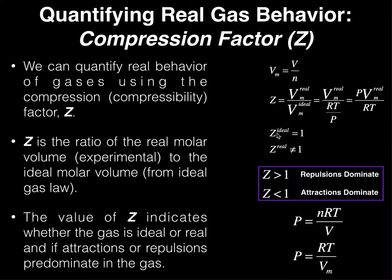For an ideal gas behaving truly ideally, Z equals 1. But for any gas deviating from ideal behavior, Z will not equal 1 — it will be either less than 1 or greater than 1, never negative. If Z is greater than 1, repulsions dominate within the gas. If Z is less than 1, attractions dominate. We'll now do an example problem to calculate Z and determine which dominates.